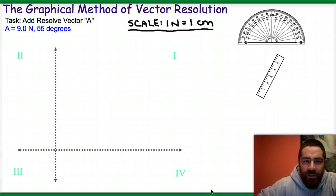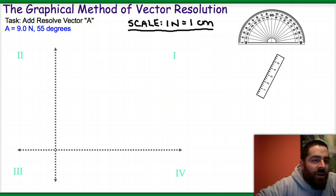Okay, in this screencast we're going to take a look at the graphical method of vector resolution, or in other words, resolving a vector into its x and y components, or horizontal and vertical components, respectively. The first thing that you have to do is basically graphically represent the vector. In this case you have 9 newtons at 55 degrees.